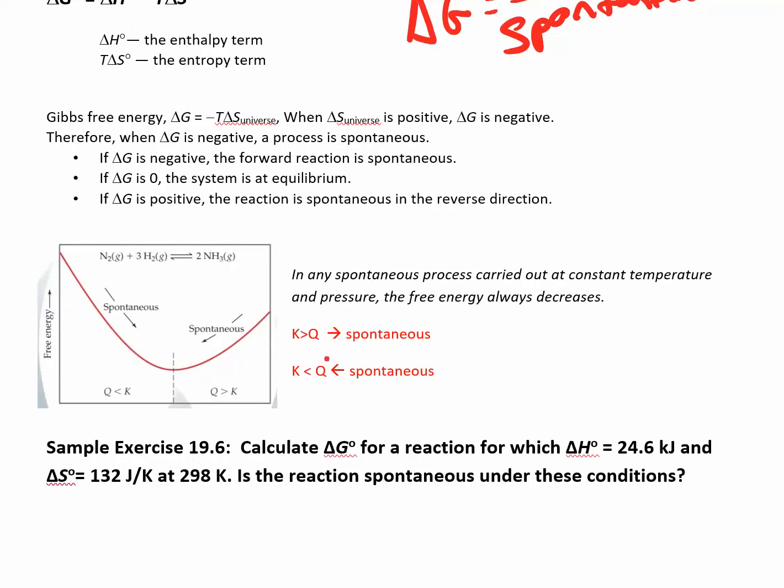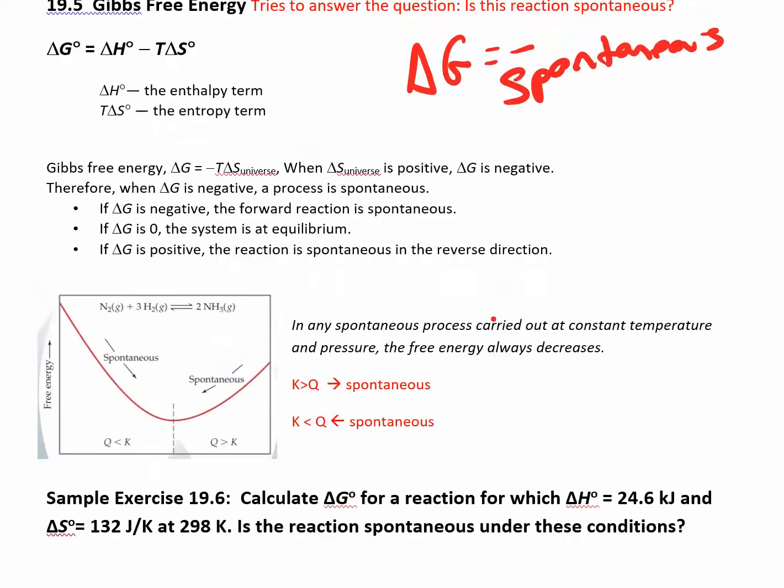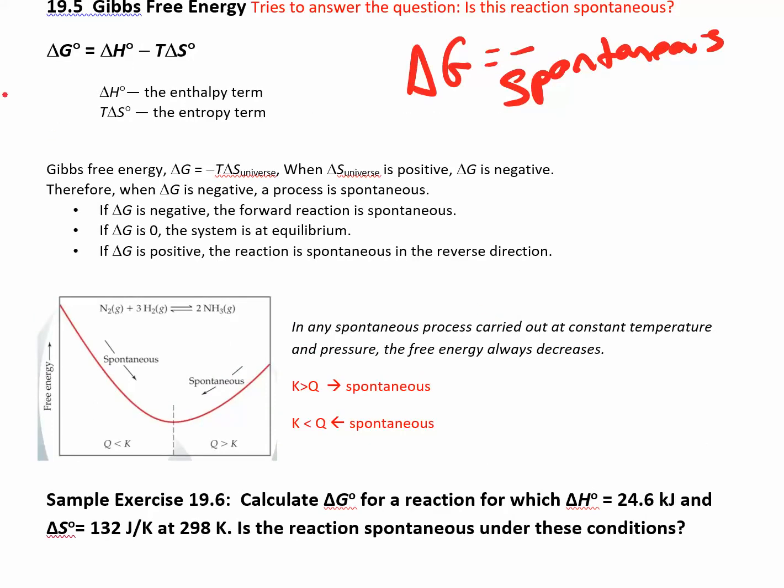If it's positive, that means it's non-spontaneous in the forward direction. You could also look at Q and K to figure out in which direction the reaction is proceeding. So if K is greater than Q, it's spontaneous in the forward direction. If K is less than Q, it's spontaneous in the reverse direction. We're going to look at this again closer to the end of the chapter when we're looking at delta G under non-standard conditions. Whenever you see the superscript zero, that means you're under standard conditions.